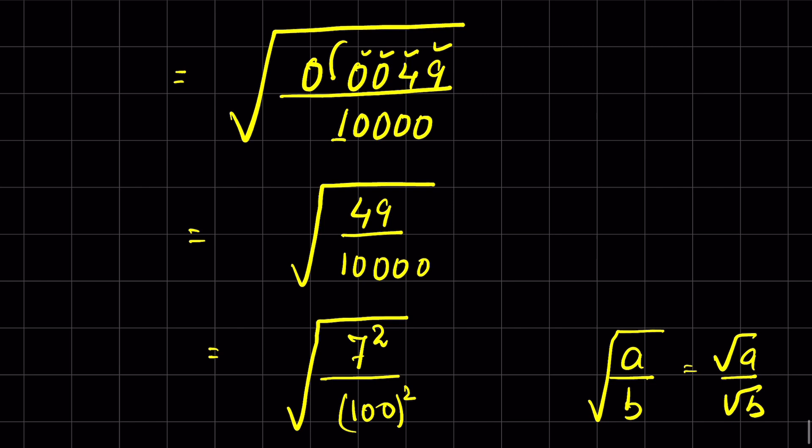Else you follow this method where we remove the decimal and then find the square roots. How did you solve this question? Let me know in the comment section. Like and subscribe. Thanks so much.